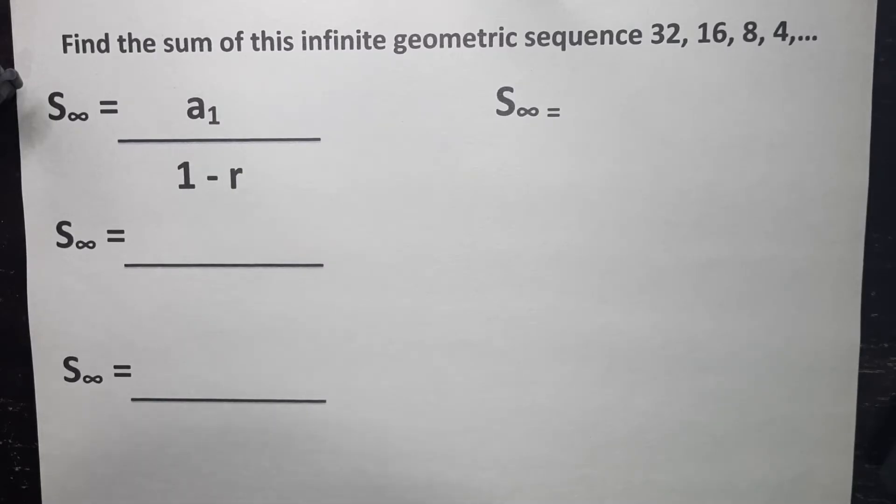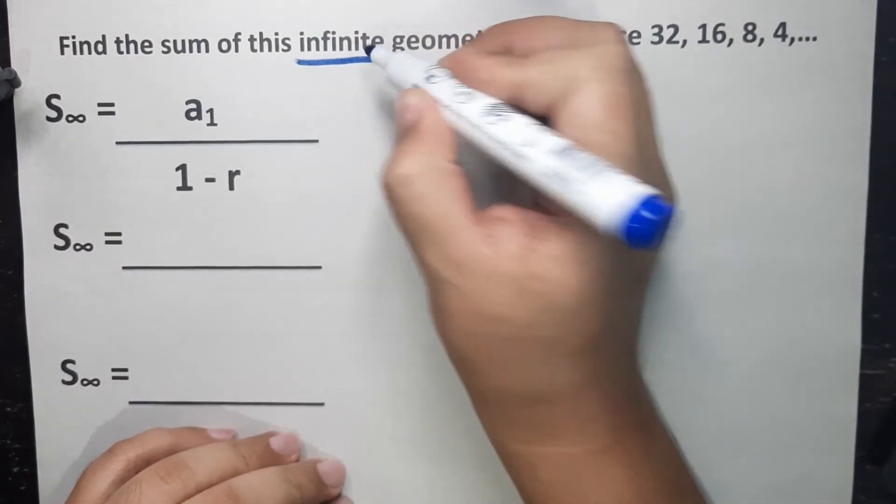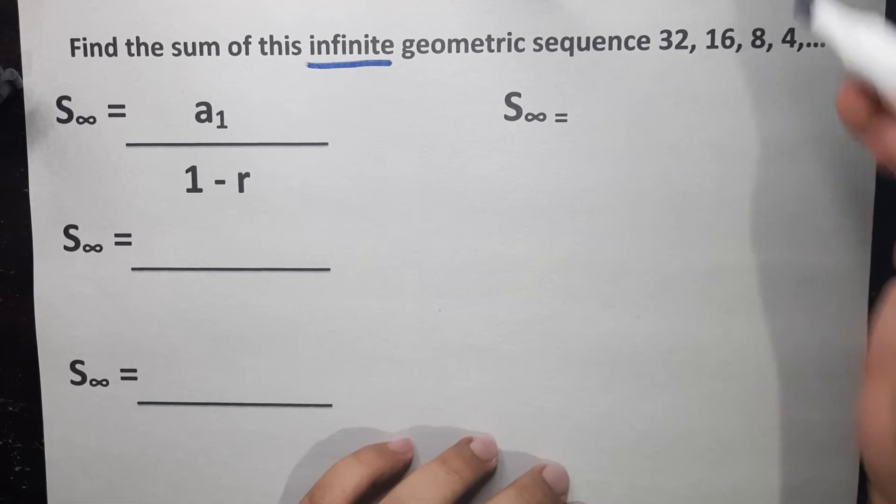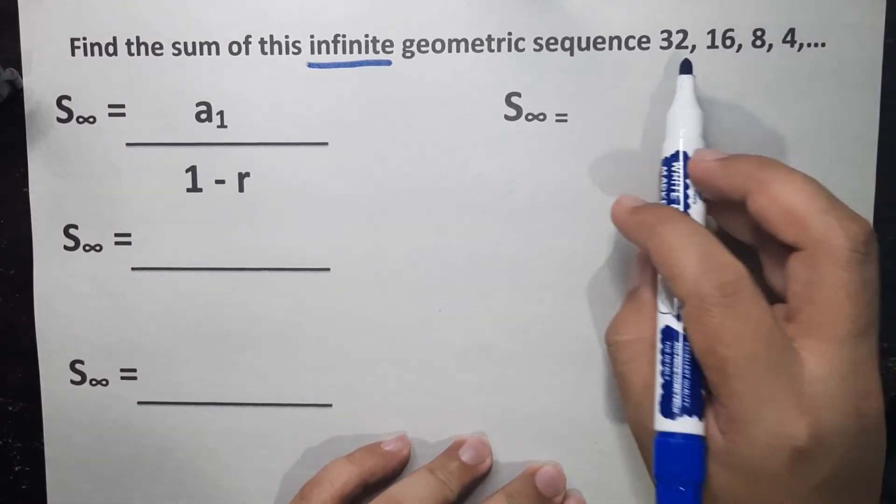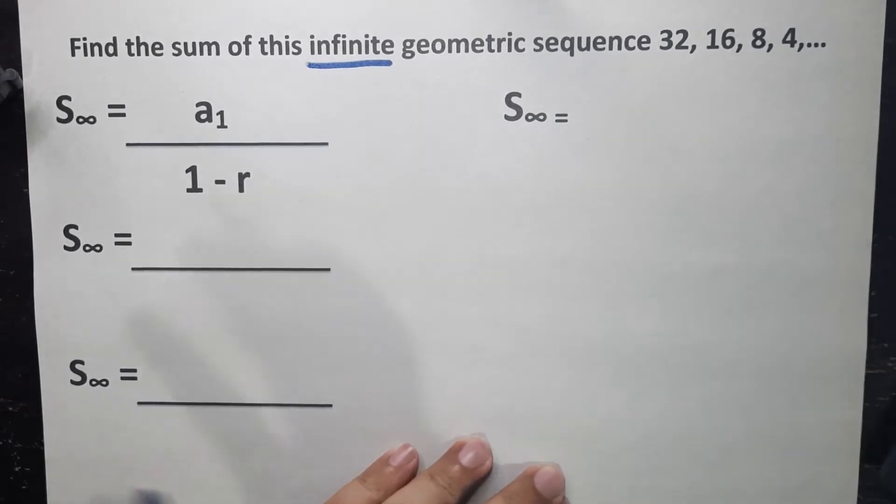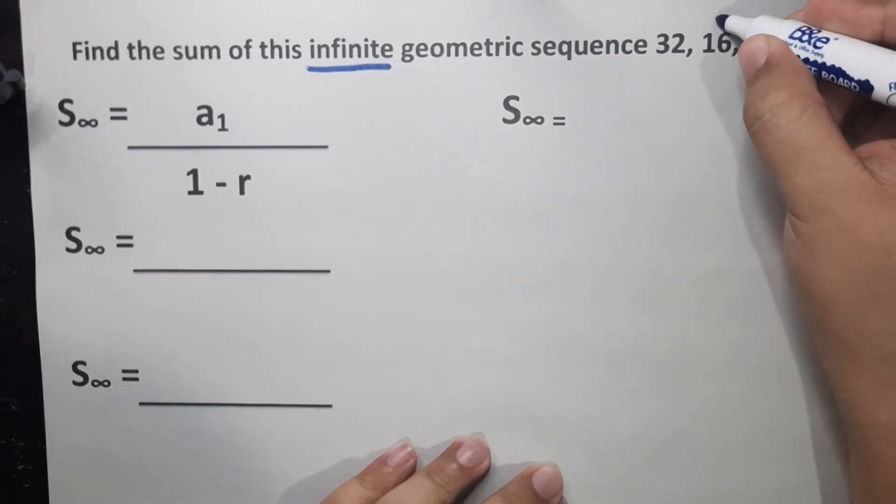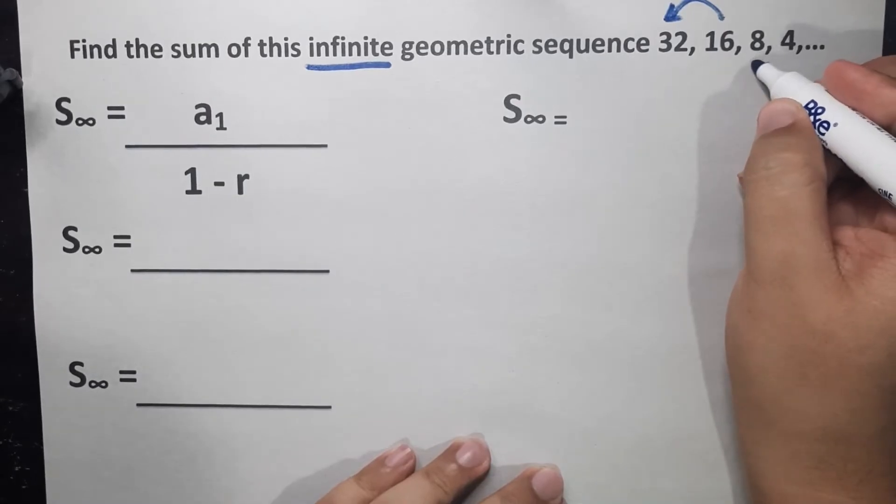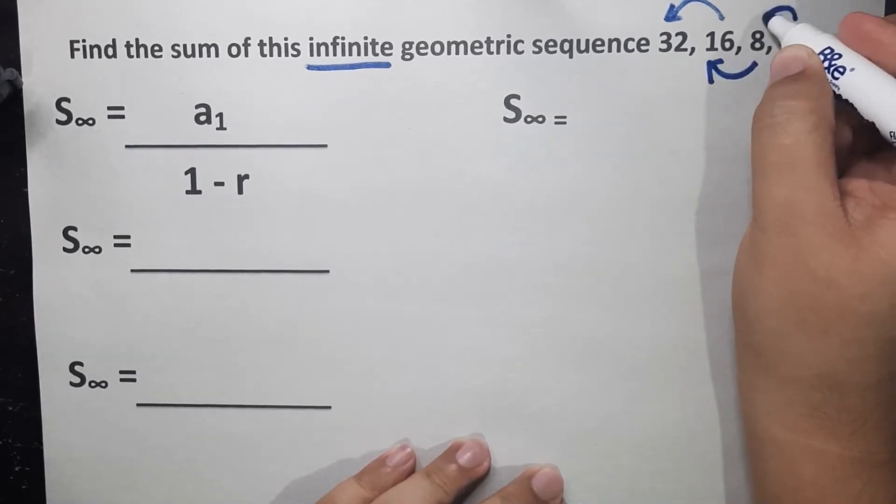So let's have our first example for the sum to infinity of the geometric sequence. Find the sum of this infinite geometric sequence, 32, 16, 8, and 4. Again, the clue is infinite, so which means we will be using the formula for sum to infinity. Now, the first step is always determine the common ratio. It's current term divided by the previous term. You cannot use 32 as your current term because it doesn't have any term before it. So which means you can use 16 as your current term divided by 32 because you have a previous term.